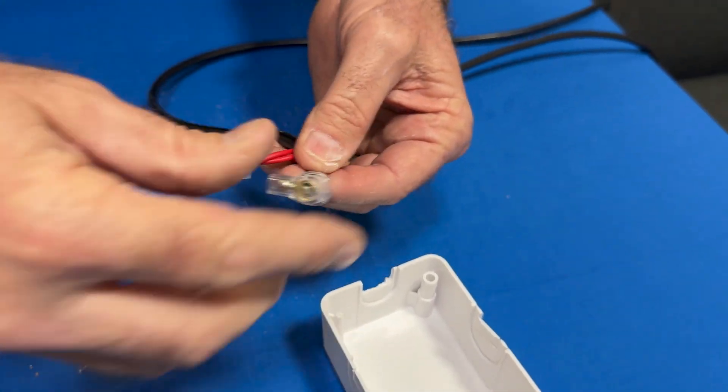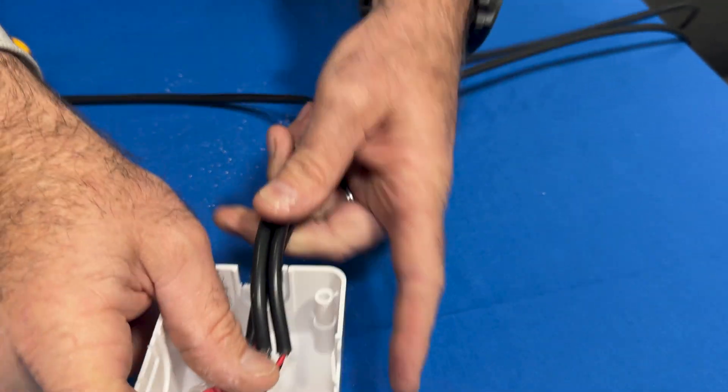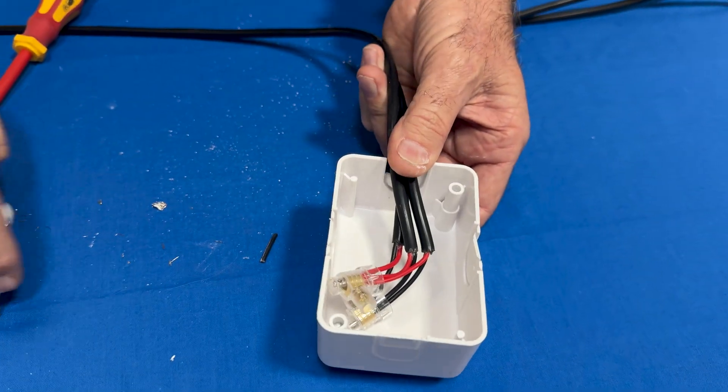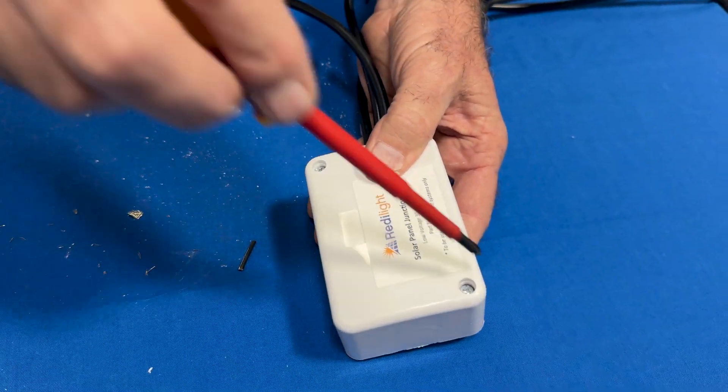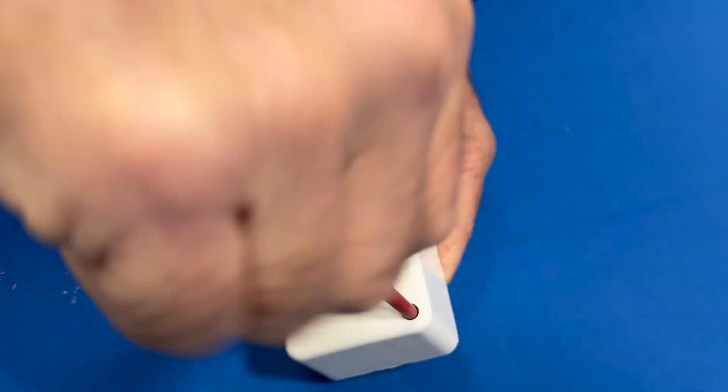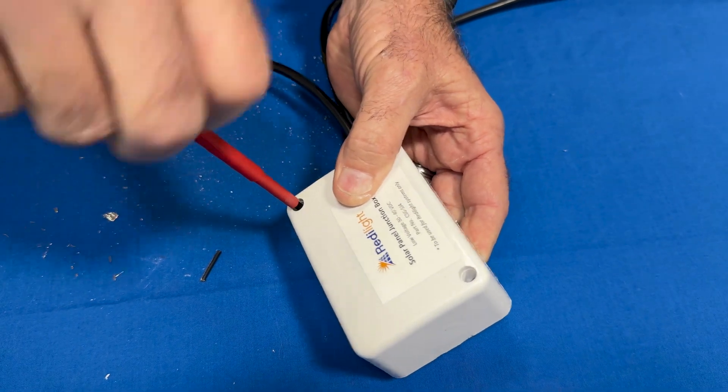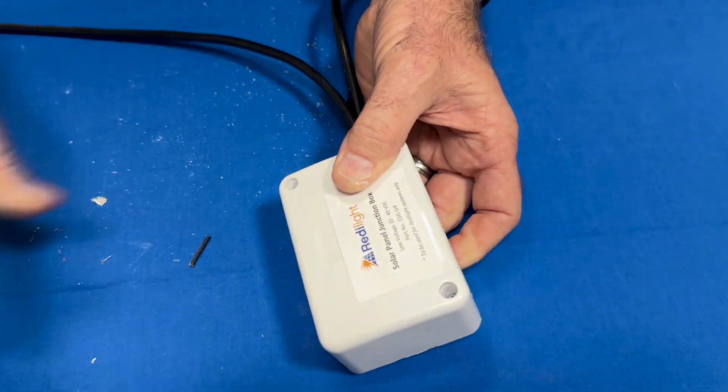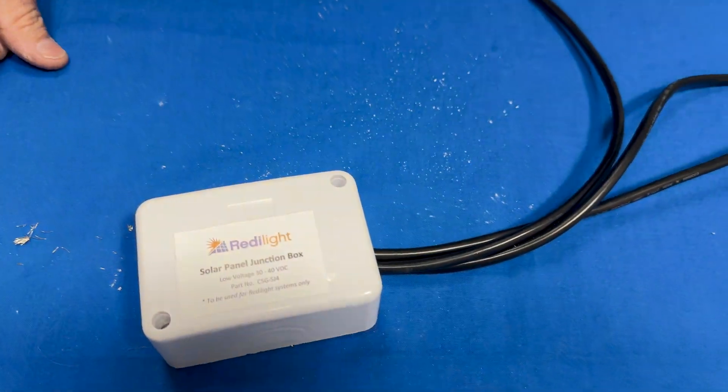You can put some tape around those if you like, but just for this demonstration I'm not, so it gives you an idea. Then that goes back on there. It's got two screws, just tighten those up. And you're done. That is how you join multiple cables in the junction box.